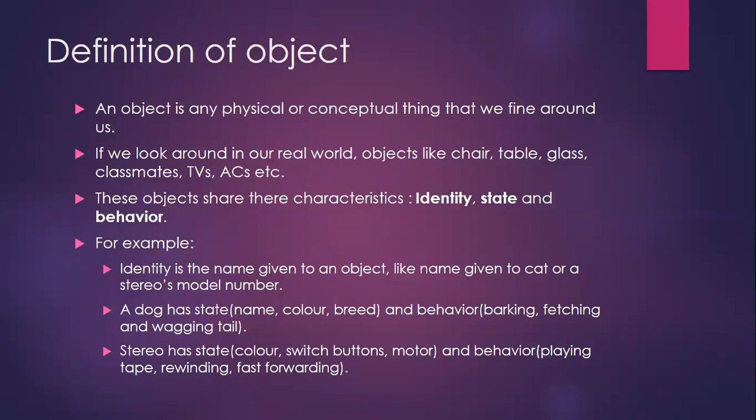An object has two characteristics: state and behavior. How does a dog behave in the real world? They bark, they fetch, they wag their tail — that is the object's behavior. The stereo speaker has states like color, switch buttons, and motors, and behaviors like playing tape, rewinding, and fast forwarding. We can add more behaviors like pause and resume.